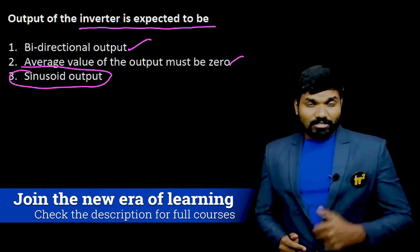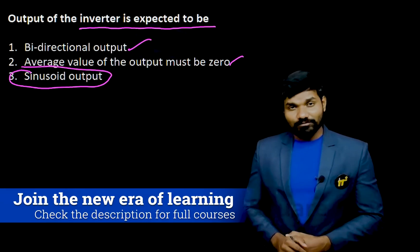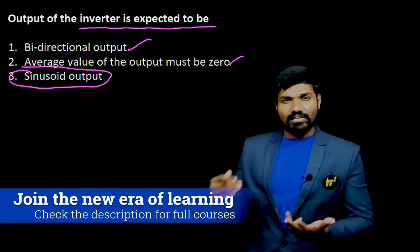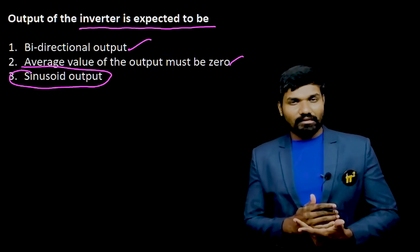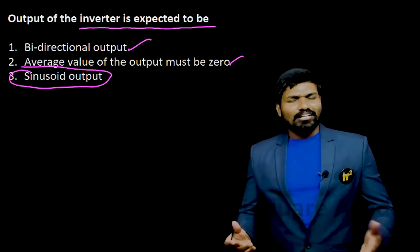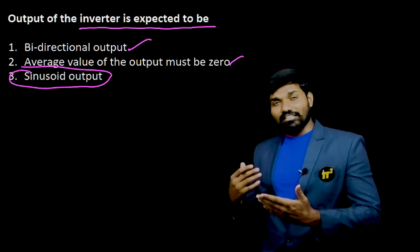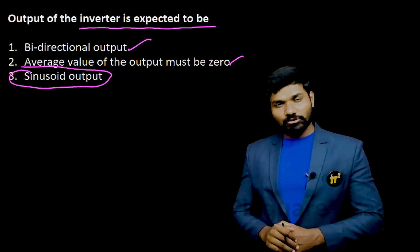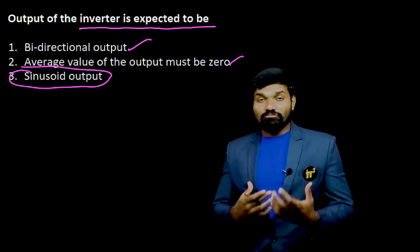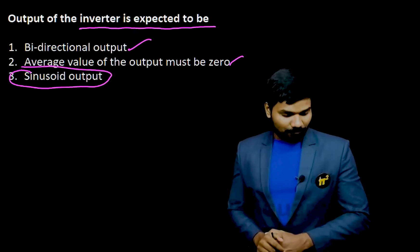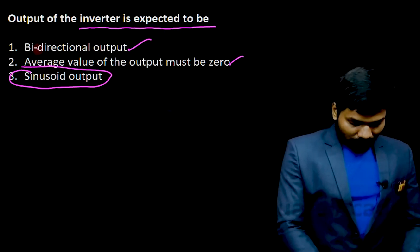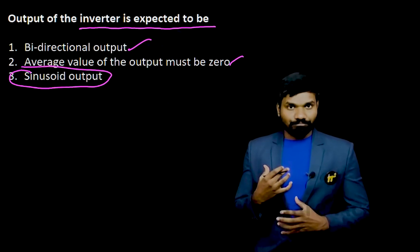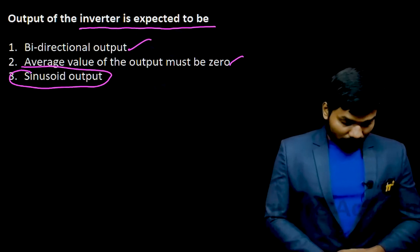Now obviously we'll have a question: why sinusoid? I already discussed this in our 'why series' questions — why sinusoid, why 50 hertz in India, why 11 KV, why AC. There are many interesting 'why series' questions which I discussed. I'll give the link in the description so you can get more information. Anyway, these are the key aspects we expect from an inverter.